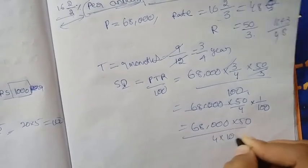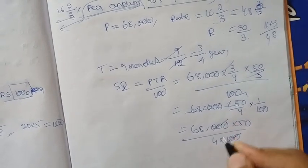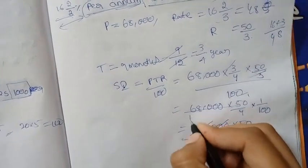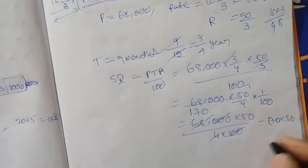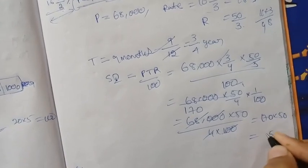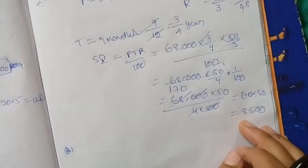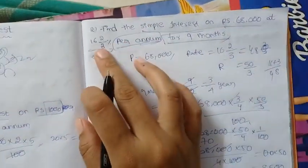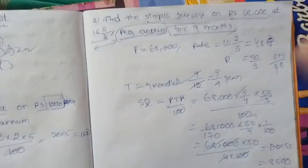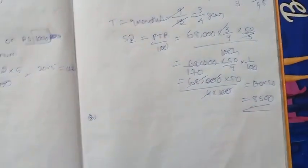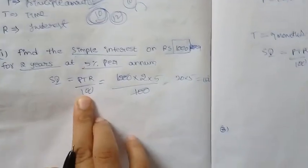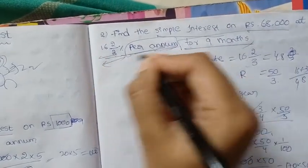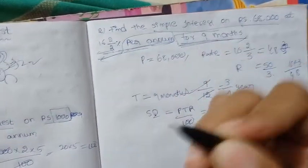The 20s cancel. 68,000 into 50, whole divided by 4 into 100. After cancellation: 170 into 50 gives 8500. So the simple interest is 8500 rupees. You convert months by dividing by 12 to get the time in years.